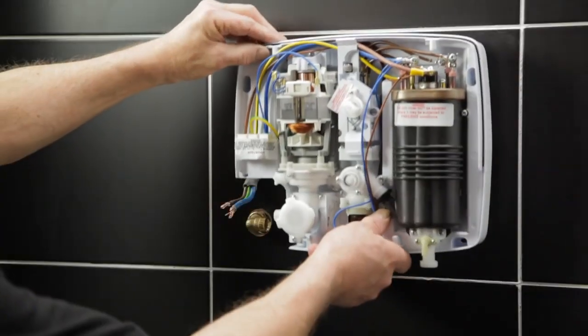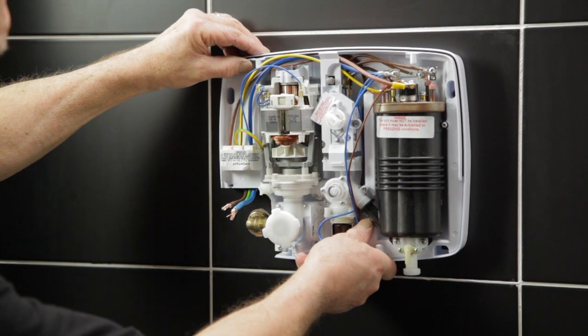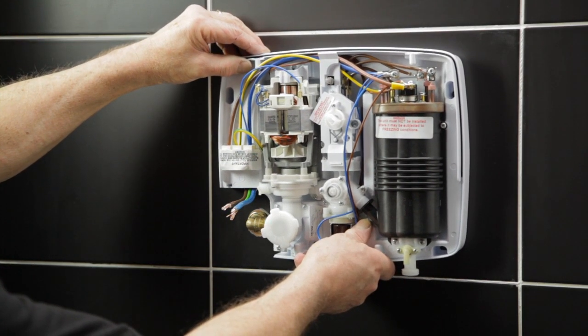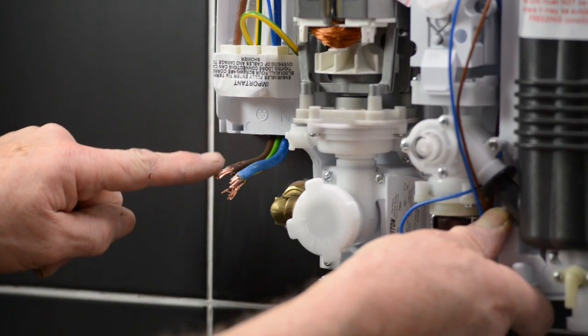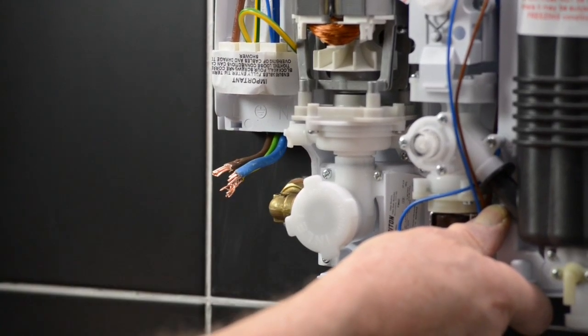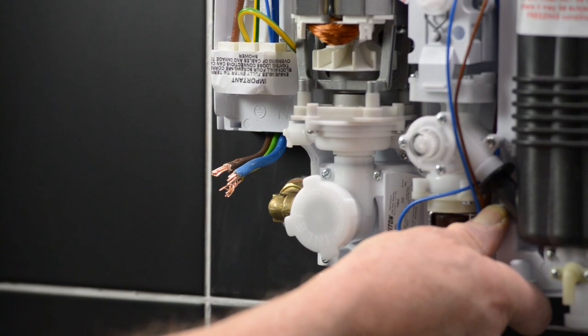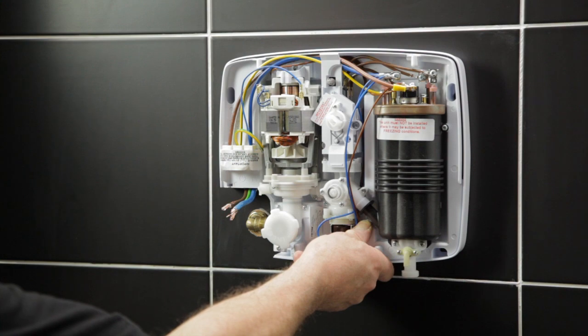Now, place the unit onto the wall. It's a perfect match with all the existing fixing holes covered over. The cable and pipe connections are in exactly the right place. This ensures a quick and straightforward changeover with no alterations to the existing plumbing and wiring, and no disruption to the tiling.